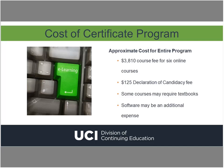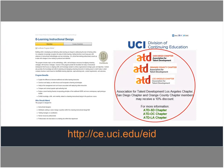Prior to enrollment in the practicum, students must purchase or otherwise have access to and gain working knowledge of an authoring tool such as Articulate Studio, Storyline, Adobe Captivate, or other. Therefore, software may be an additional expense. We offer 10% off course fees to members of ATD San Diego, Orange County, and Los Angeles chapters. If you are a member of any of these chapters, please visit the chapter website for more information about the discount.